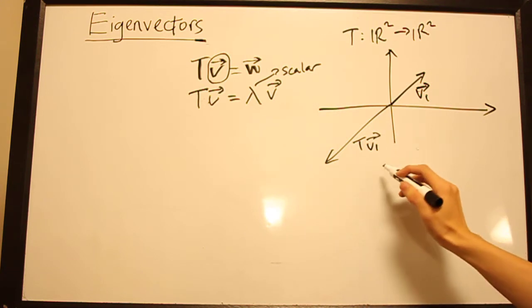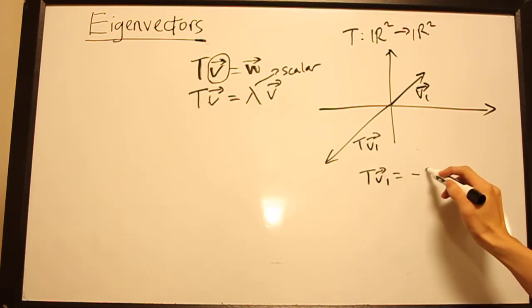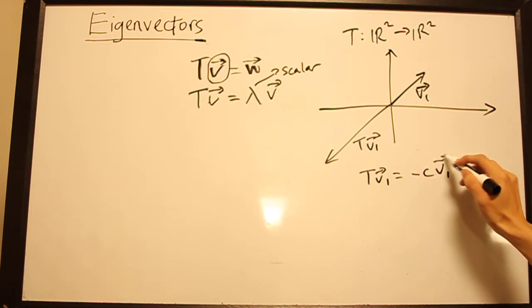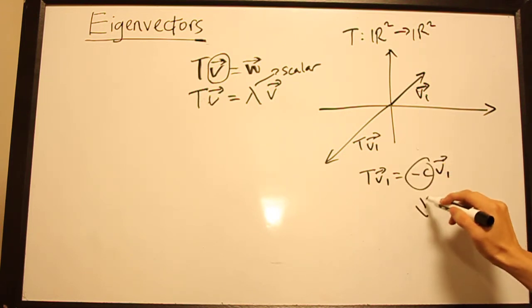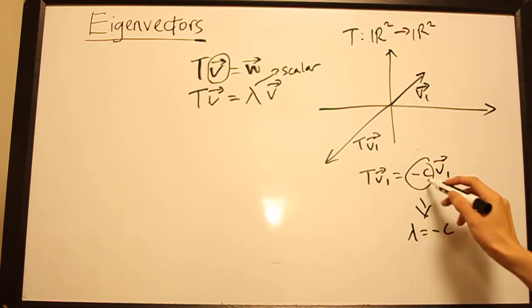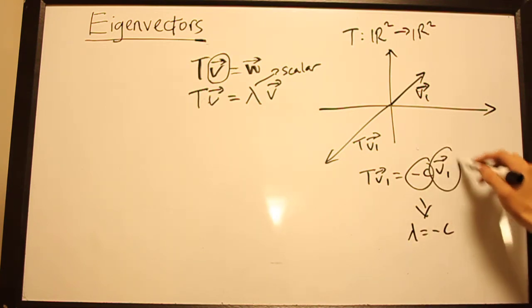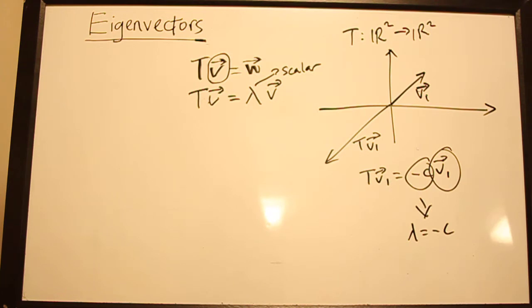We can write that as T(V₁) equals minus some constant V₁. So in this case the lambda corresponds to this negative C and V₁ is our V in this case.